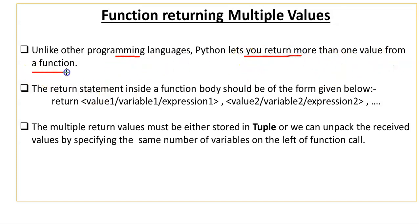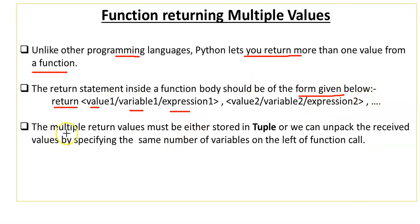In Python, a function can return more than one value. The return statement inside a function body should be of the following form. If multiple values are written, they are written as comma-separated values — value1, variable1, expression1, value2, value3 — like this. The multiple return values are stored as a tuple and received by the caller function as a tuple.